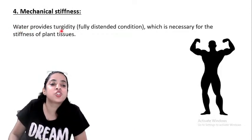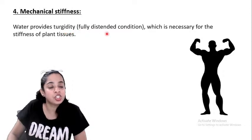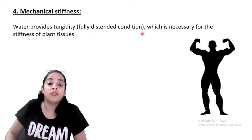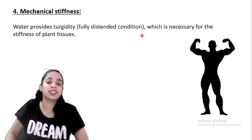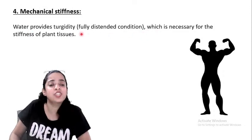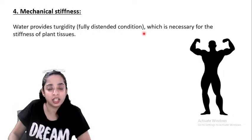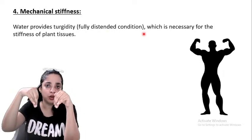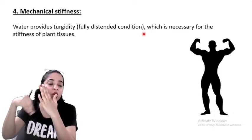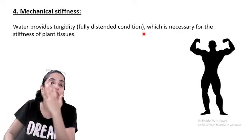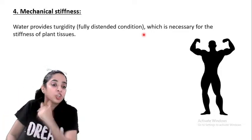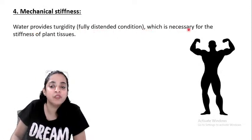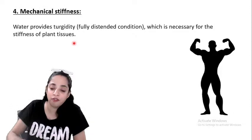Water provides turgidity — a fully distended condition — because there is stiffness. Why do leaves not droop? Why are leaves stiff? Because of turgidity. Water brings turgidity. So water provides turgidity, that is the fully distended condition, which is necessary for the stiffness of plant tissues.